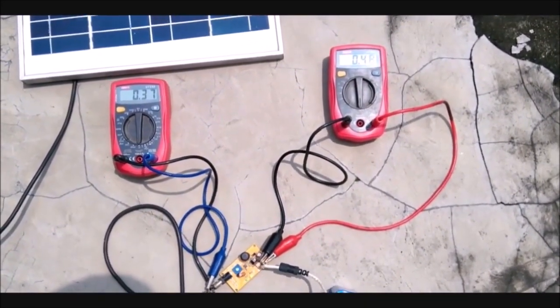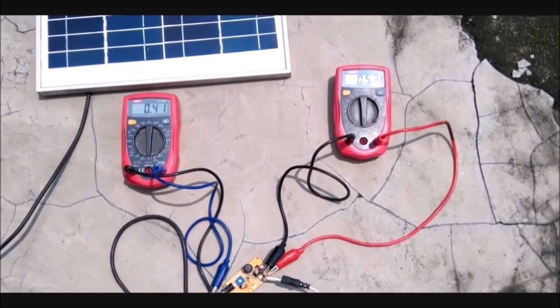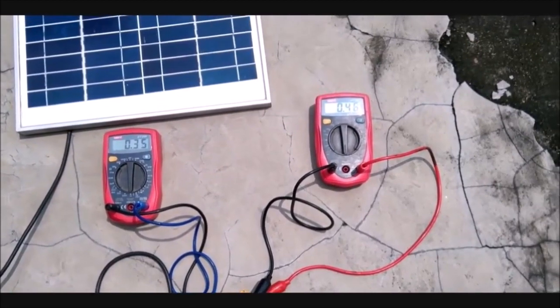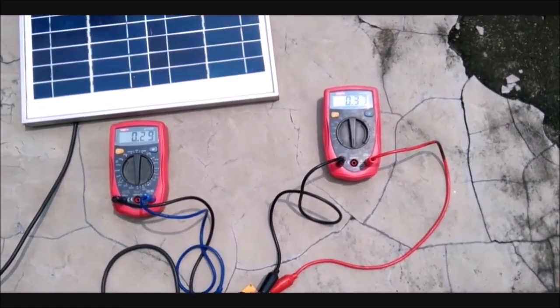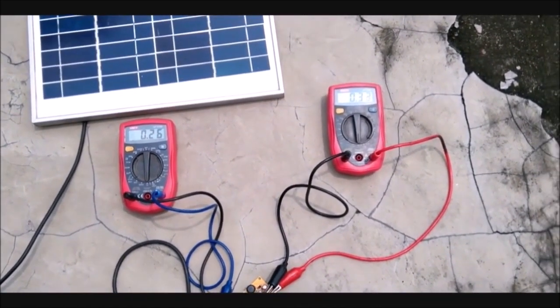Now as the Sun gets more brighter you can see that the charging current has crossed 500 milliamps. Now again it has dropped as the sunlight goes down. So that is it guys this is how the project works hope you enjoyed it and thanks for watching.